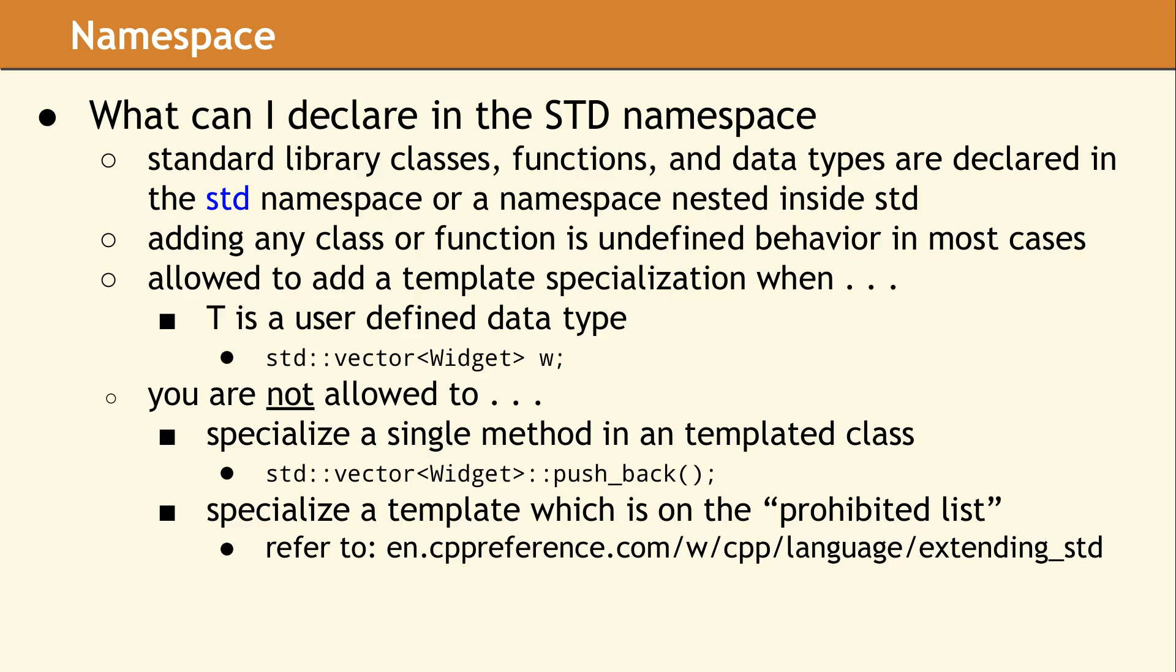You are free to declare anything you want in a namespace you define. However, there are a lot of restrictions on what you can add or declare in the existing standard library namespace. Basically, all you can add is a template specialization and all of its implementation for a user-defined data type. However, you may not add a specialized method to an existing templated class in the standard namespace.